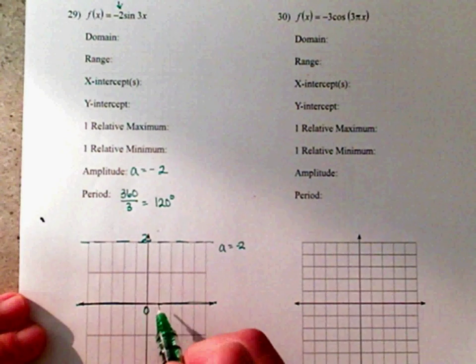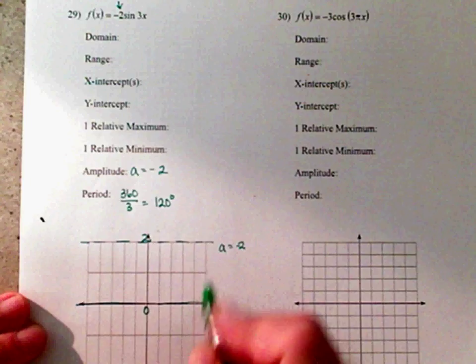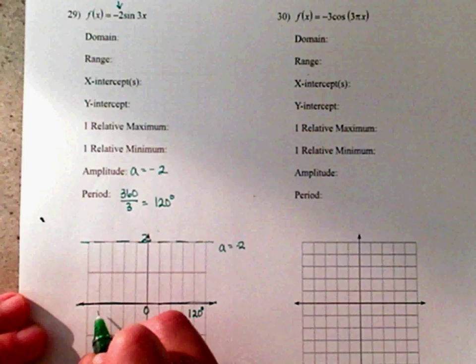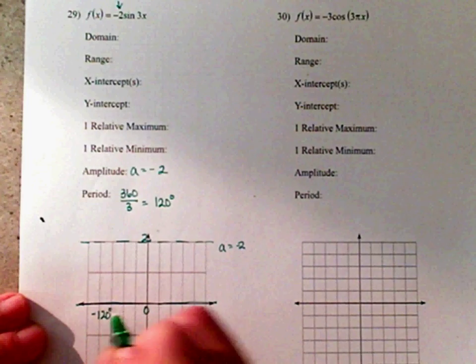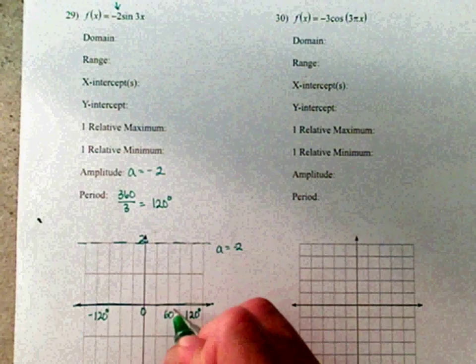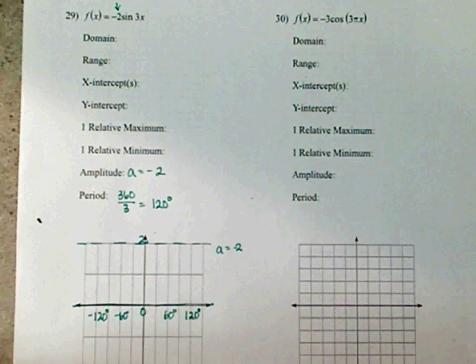And I'm going to start off at 0 here. 1, 2, 3, 4, 5. So here is 120 degrees. Going this way. 1, 2, 3, 4. This is negative 120 degrees. And halfway between 60, negative 60. So here we go.